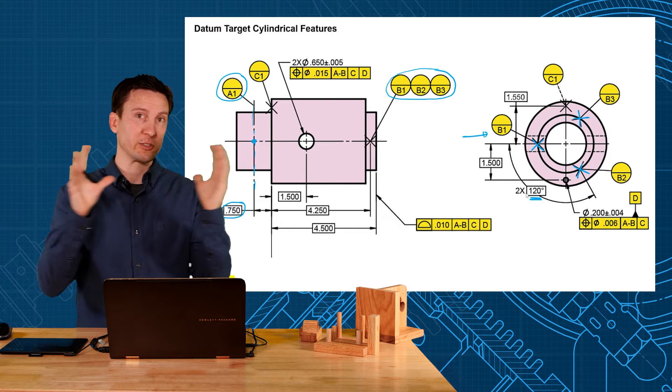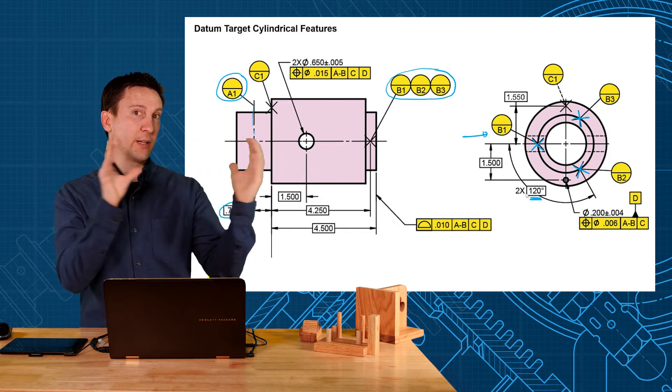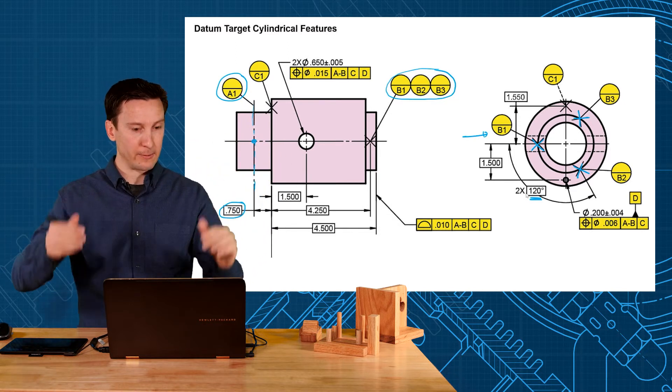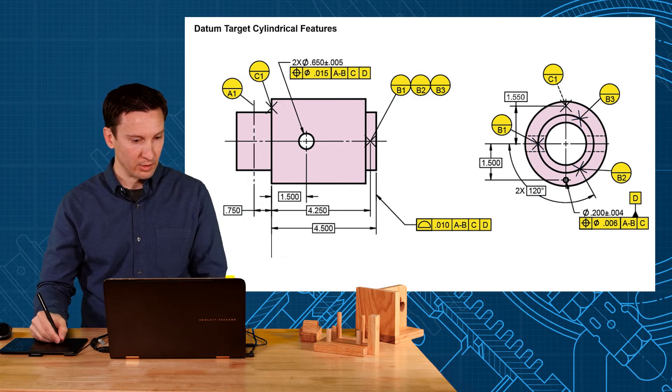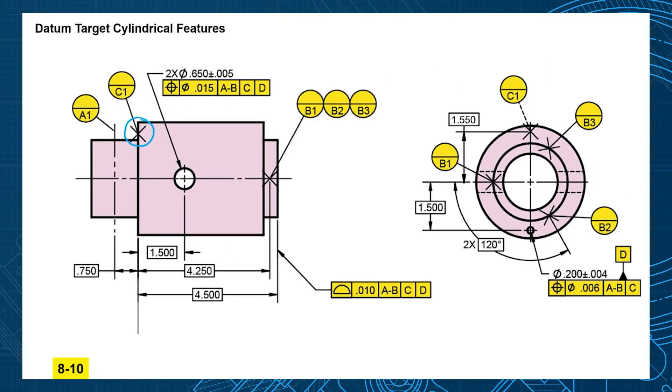We still need to constrain the six degrees of freedom - that would be the translation and rotation. To stop the translation, they picked C1 here. C1 is going to be a point at 1.550 off the center.